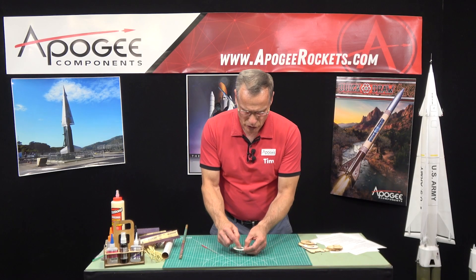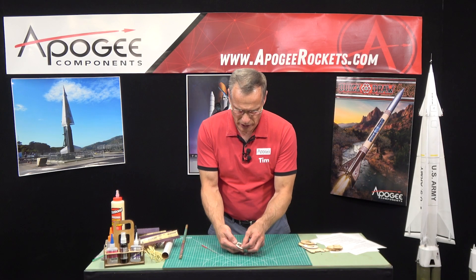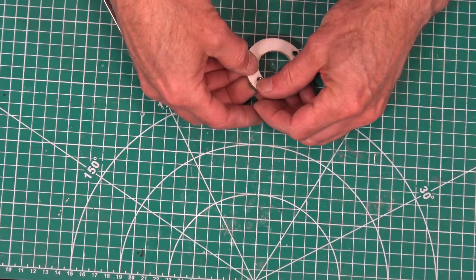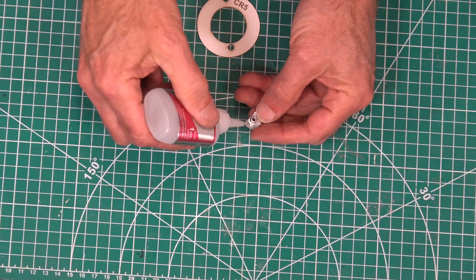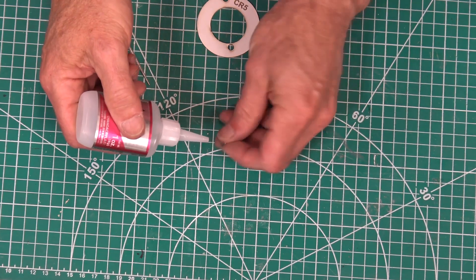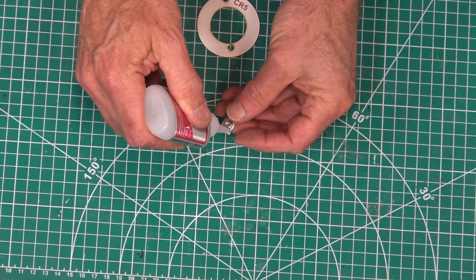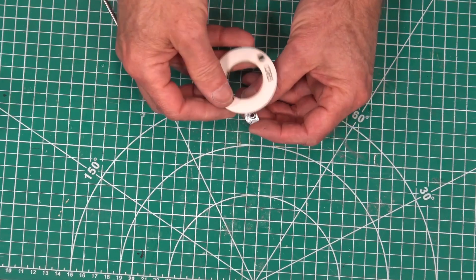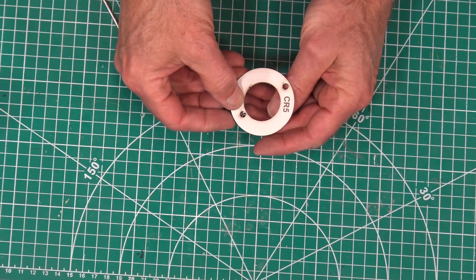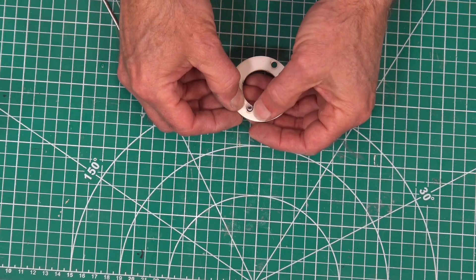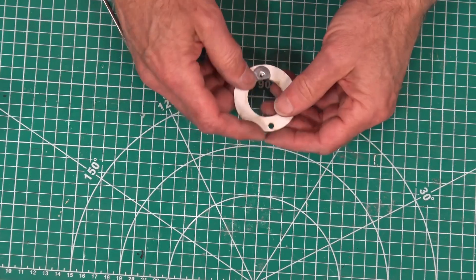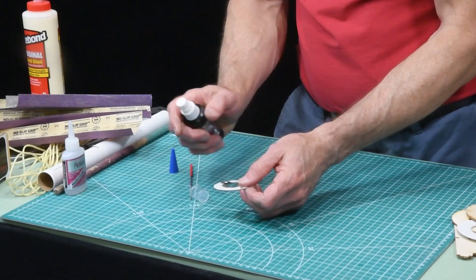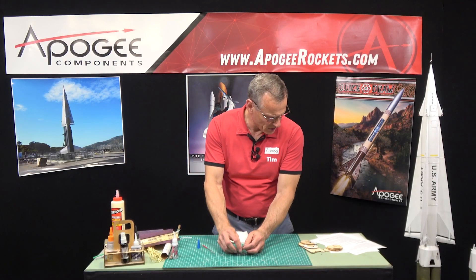We want to make sure when we glue, the weld nut comes in from the opposite side as the lettering on there. I'm going to use some thick CA and some Insta-set. Okay, so that is step 87.